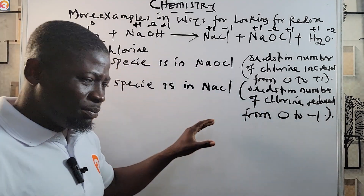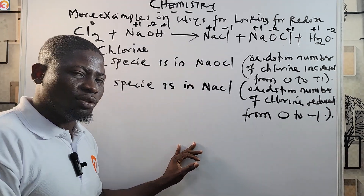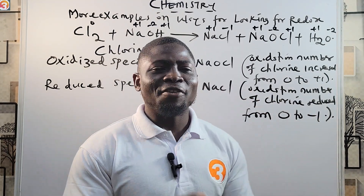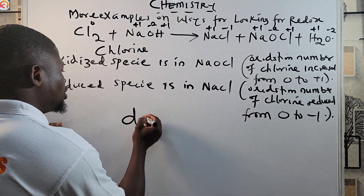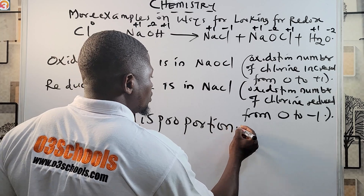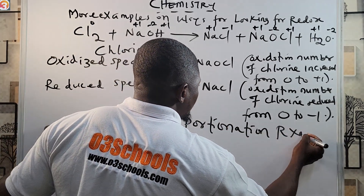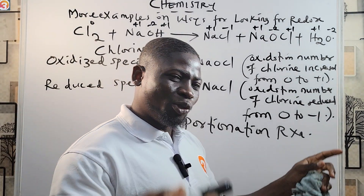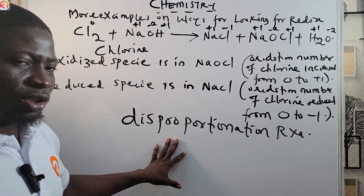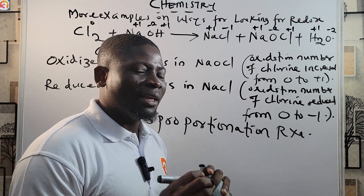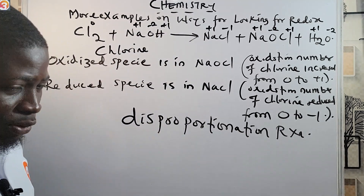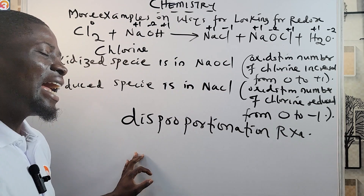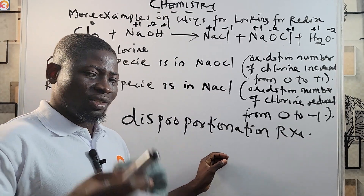A reaction in which a particular species is both oxidized and reduced is called a disproportionation reaction. This is a typical Jam exam question — please take note of that.